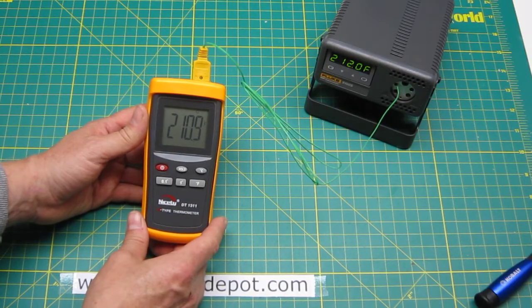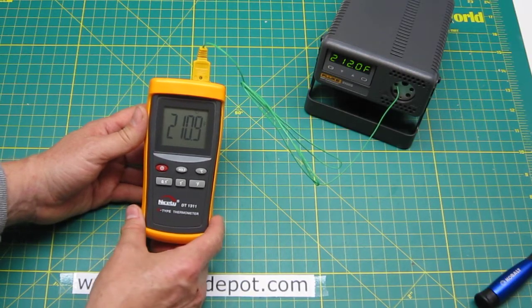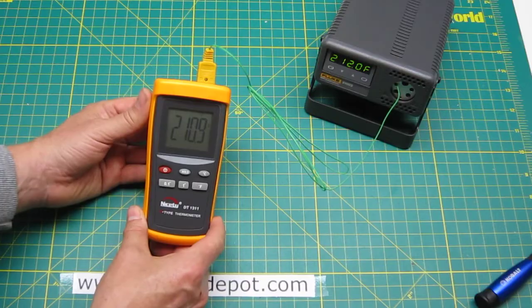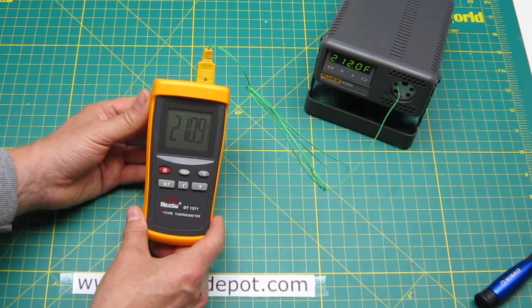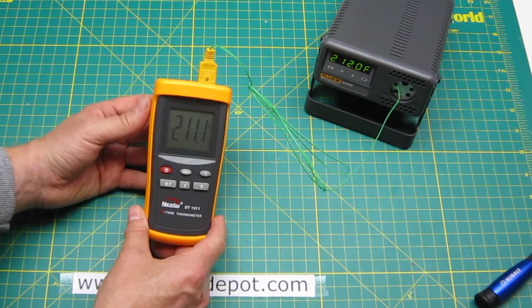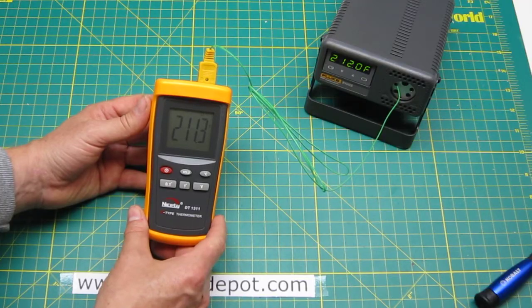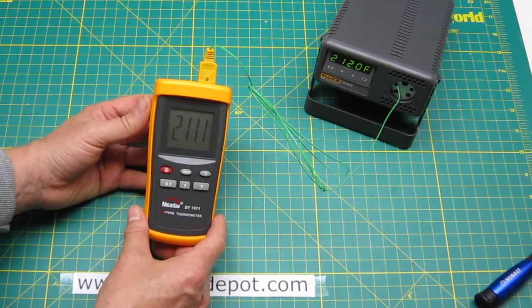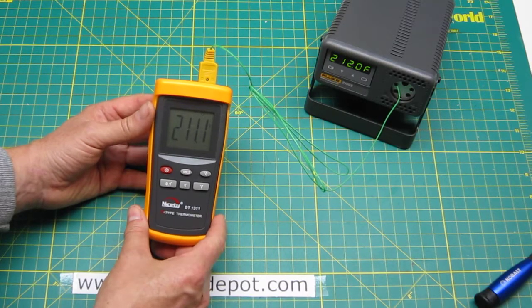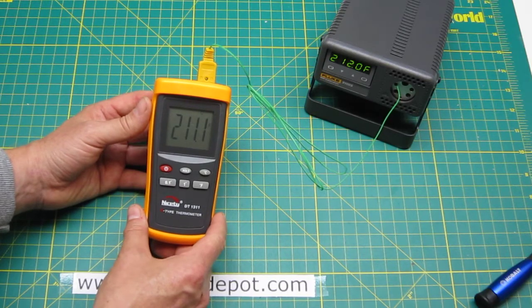It seems to have stabilized and the temperature should be 212 degrees Fahrenheit. It is at 211.3 here right now. So it's within one degree of the actual temperature and I think this is pretty good.